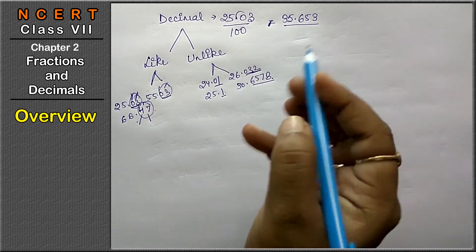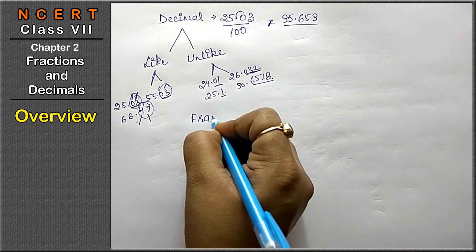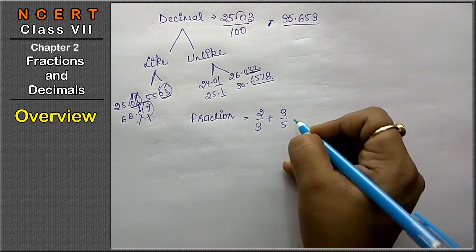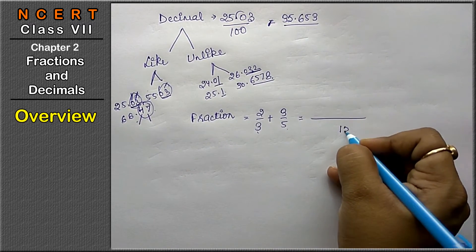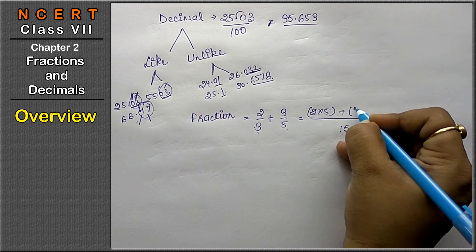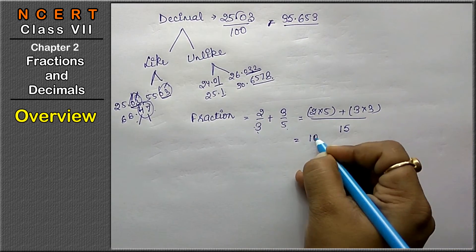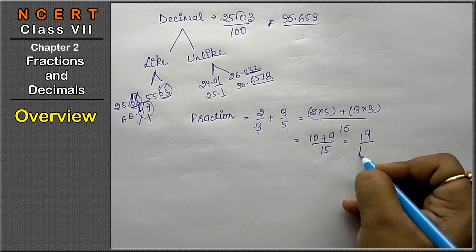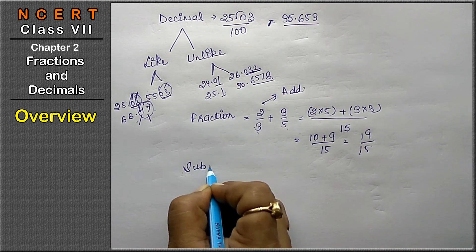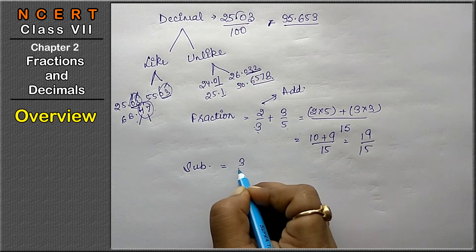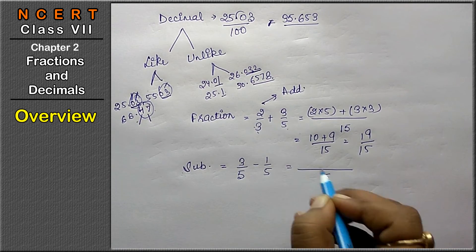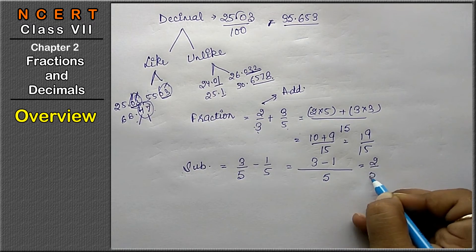Now, addition of fractions: like 2 upon 3 plus 3 upon 5. We find the LCM, which is 15, then cross multiply: 2 × 5 = 10 and 3 × 3 = 9, giving 10 + 9 upon 15 = 19 upon 15. For subtraction with like denominators: 3 upon 5 minus 1 upon 5 — same denominator, so 3 − 1 = 2 upon 5 is the answer.